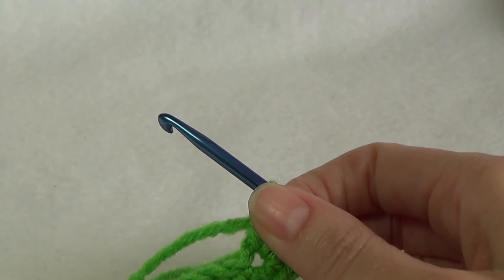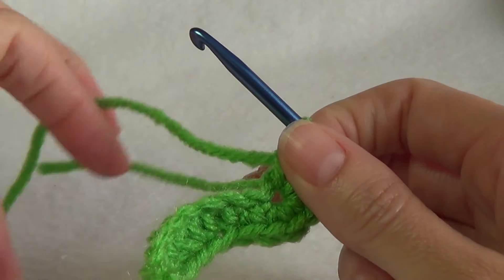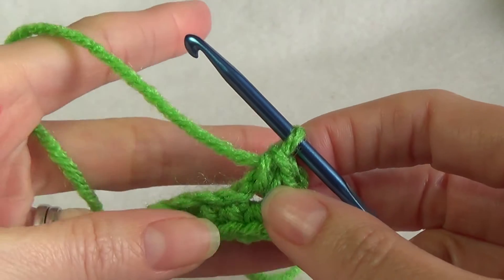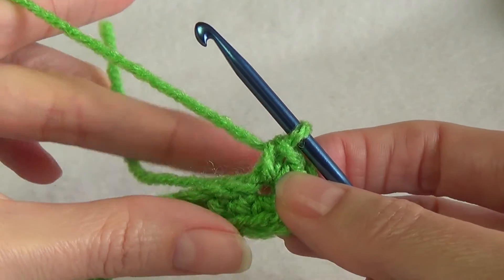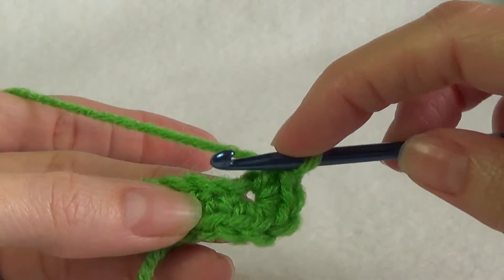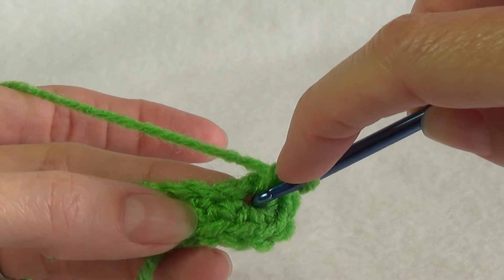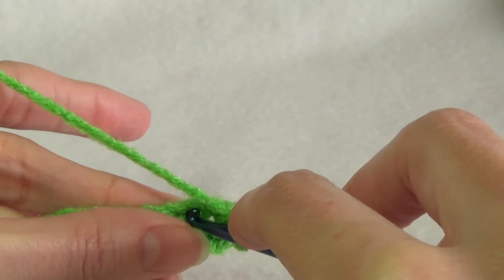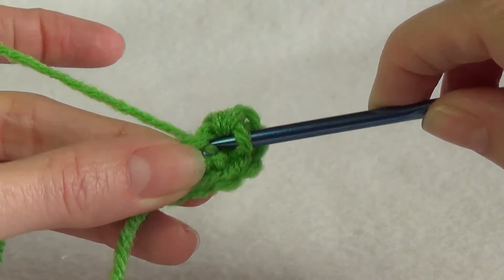I'm working down the other side of the chain. We're going to work a single crochet, then a half double crochet. We can actually work over our yarn if we want to. So working into the next one's there, single crochet.